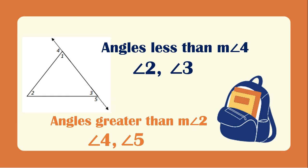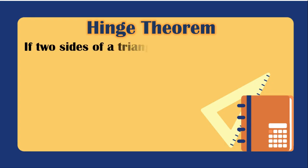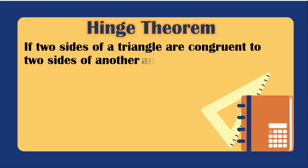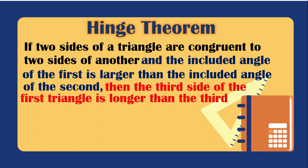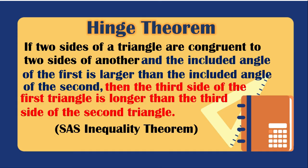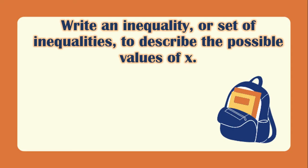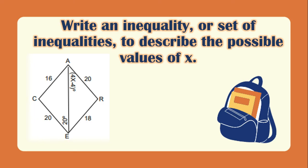Now let's look at inequalities in two triangles — the hinge theorem. If two sides of one triangle are congruent to two sides of another triangle, and the included angle of the first is larger than the included angle of the second, then the third side of the first triangle is longer than the third side of the second triangle. This is also called the SAS inequality theorem. Example: write an inequality to describe the possible values of x.